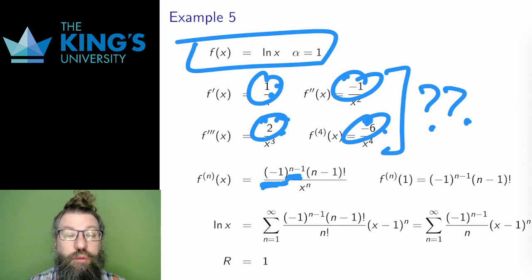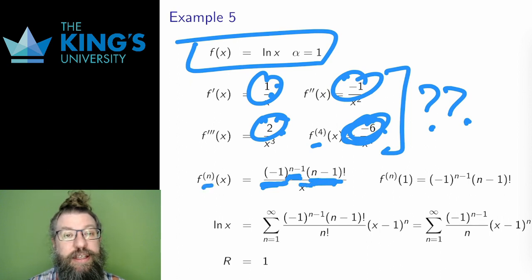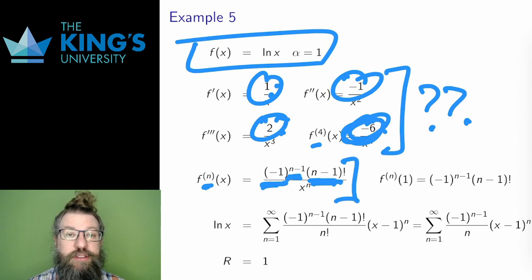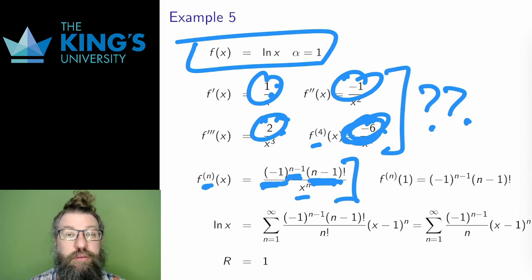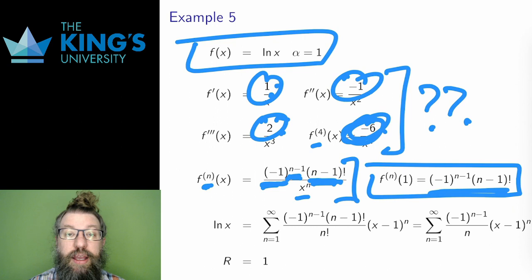So the numerator is going to be a factorial. Now I need to be careful with the indices. For the fourth derivative, the numerator is 6, which is 3 factorial, not 4 factorial — so the factorial is one less than the index: (n minus 1) factorial, not n factorial. When building these patterns, I need to be really careful with how I use my indices and how I match patterns. Finally, the denominator is a power of x matching the derivative — the nth derivative has denominator x to the n. Now I have a pattern for the derivatives. I evaluate these at the center point, alpha equals one, and that puts a power of one in each denominator, which has no effect. So the derivatives evaluated at the center point become the pattern: negative one to the n minus one times (n minus 1) factorial.